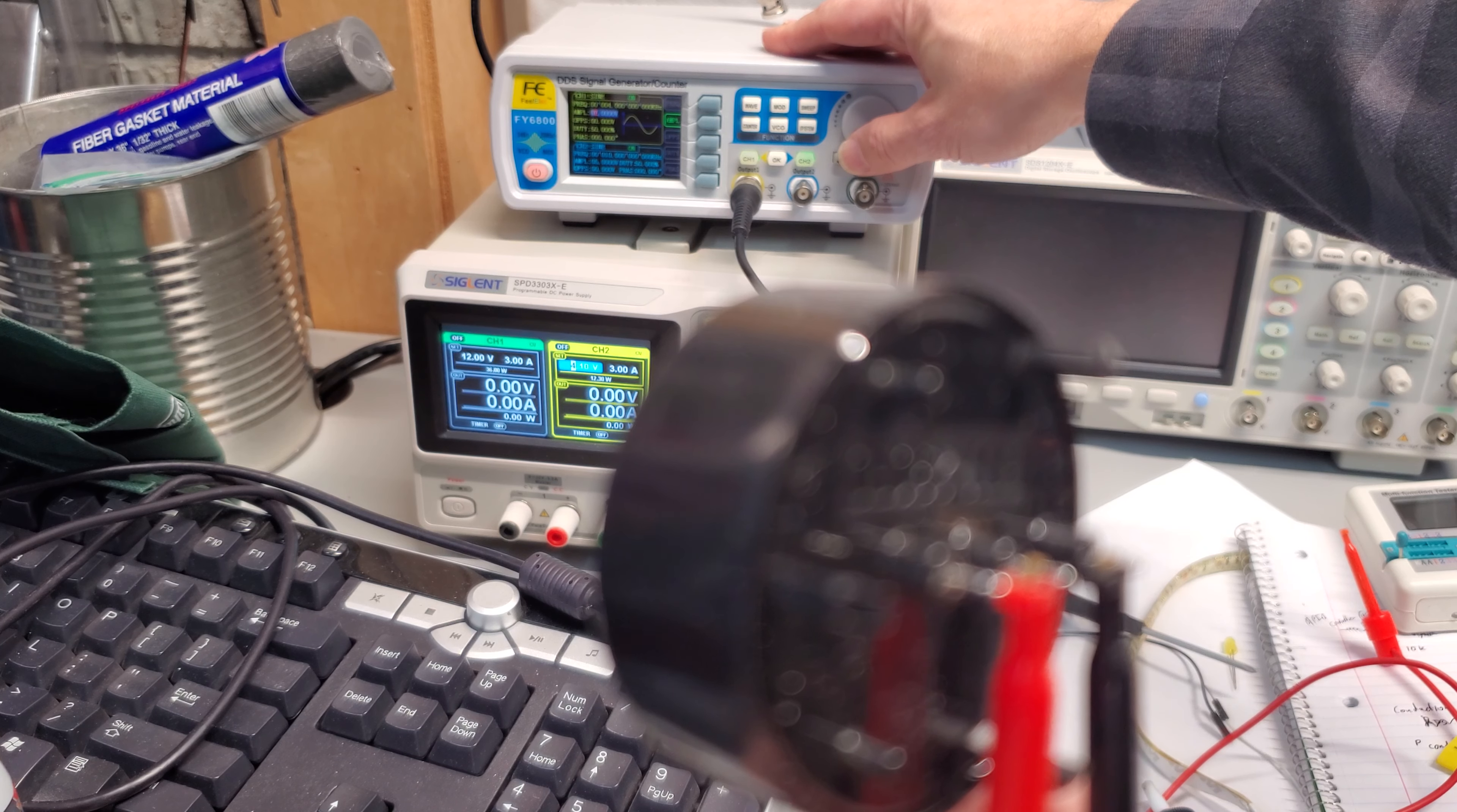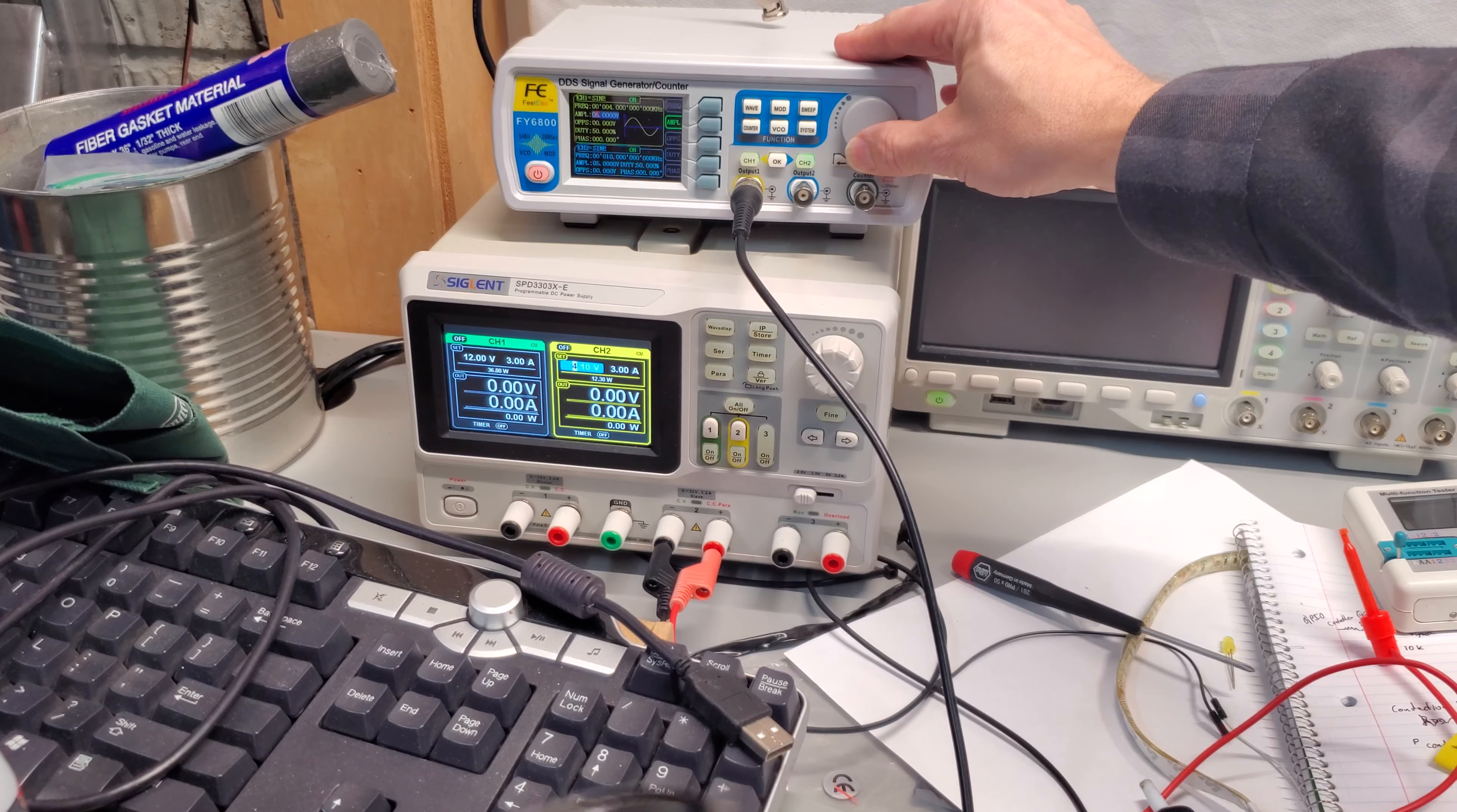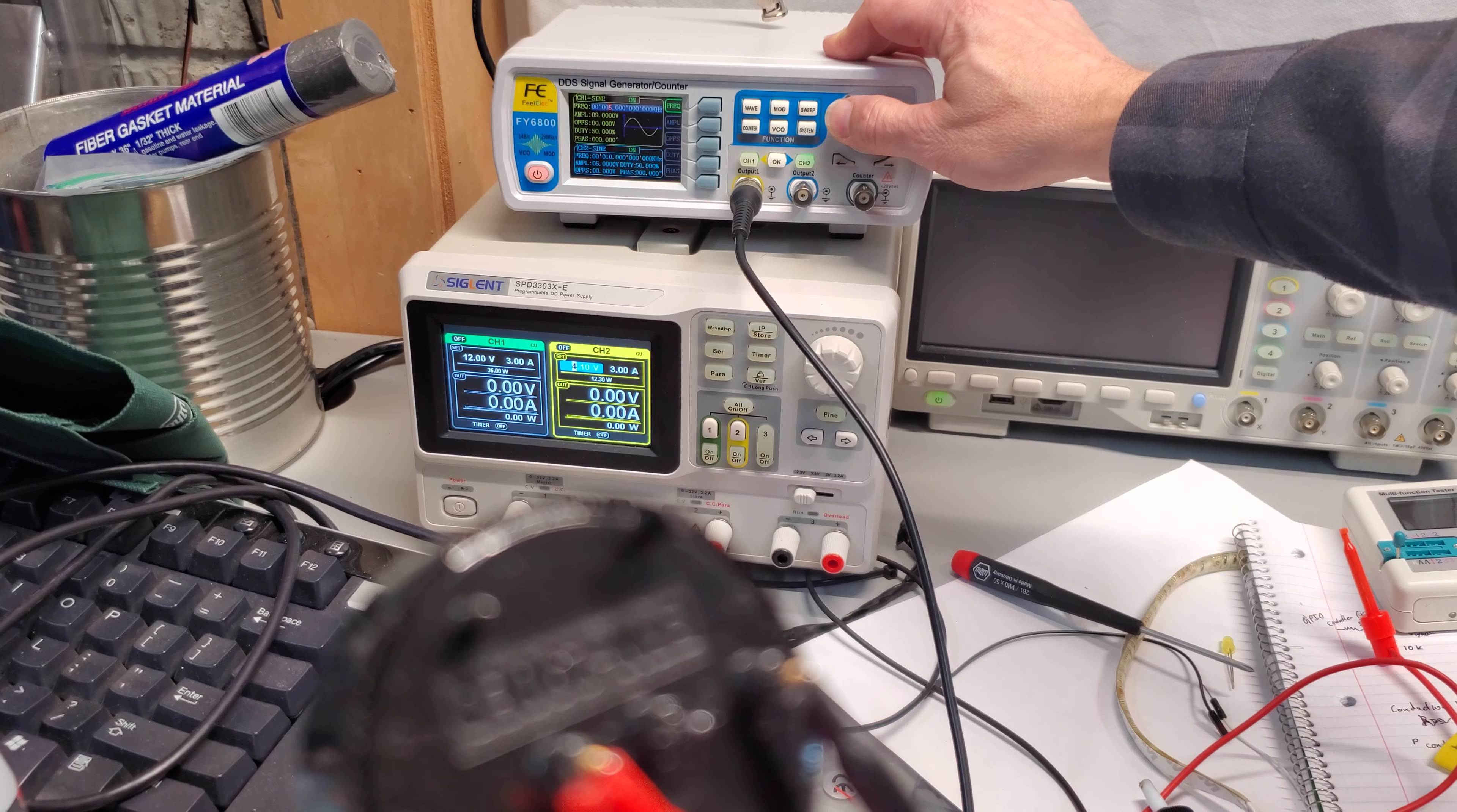But yeah we can at least drive it with the frequency signal generator here. Let's see, I think we can probably change the amplitude a little bit. Let's do the frequency to a nice annoying four. Nine volt, yeah it does get a little bit louder, pretty decent. So what happens if we take this and put it on M? Yeah that works just as well.